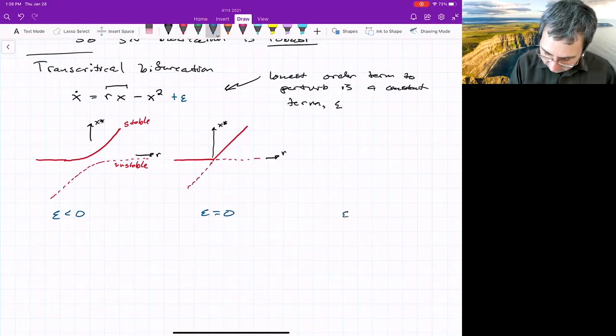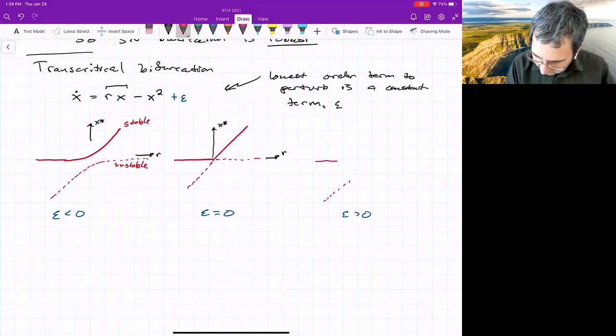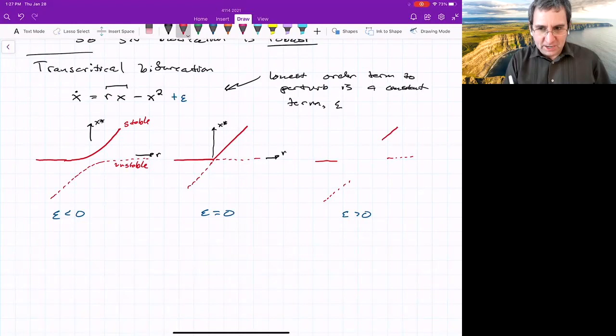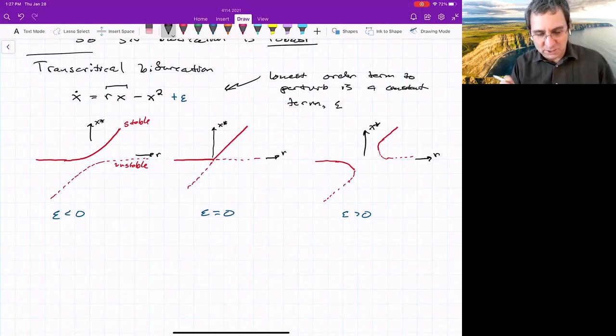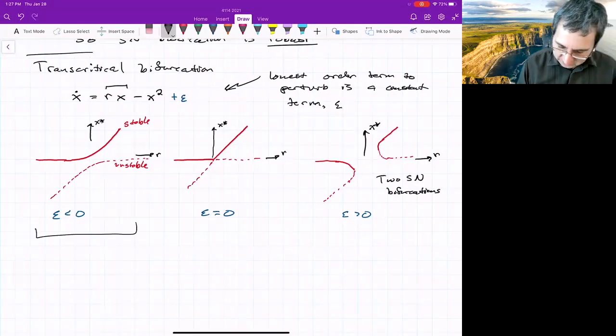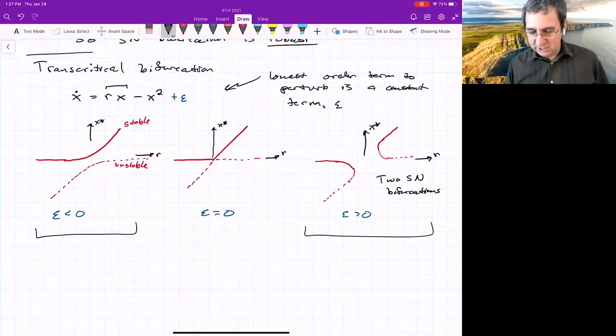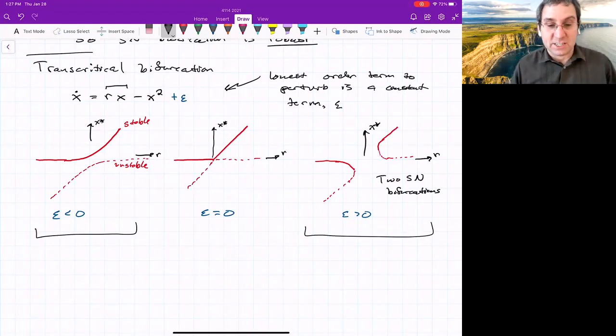What about this other case? When epsilon is greater than zero, what happens? Far away, it looks the same. Unstable and stable. And the same thing over here. Unstable, stable. But all of the action happens in the middle. So what happens for this case? For this case, you actually have two saddle node bifurcations. And then in the middle, there's no fixed point at all. I guess we still have a bifurcation in this case. We have two. Two saddle node bifurcations. So over here, there was no bifurcation. Over here, we had two saddle node bifurcations.